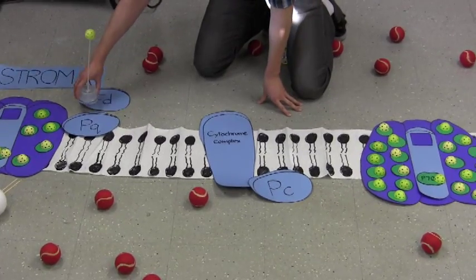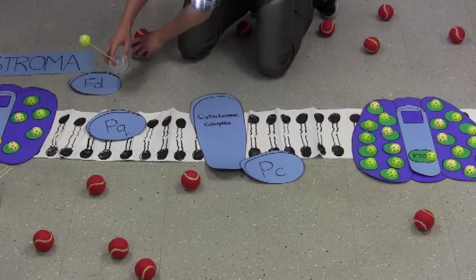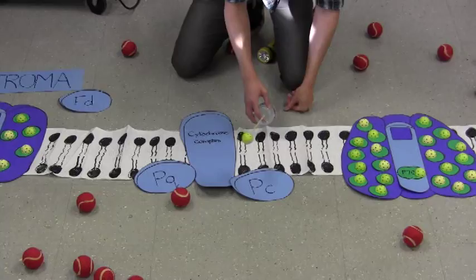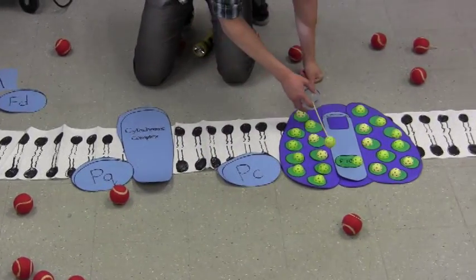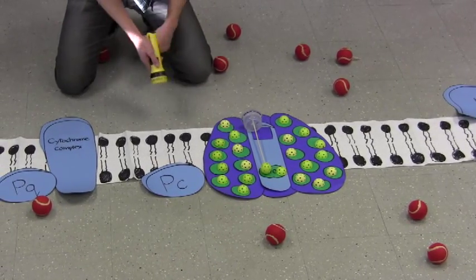So when the electron gets to plastic quinone, it's going to go down the electron transport chain as before, releasing its energy bit by bit as it actively transports hydrogen ions across the membrane, and it goes all the way back to photosystem I again. And from here, we can do it all over again.